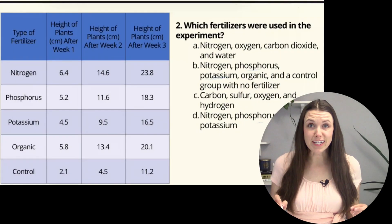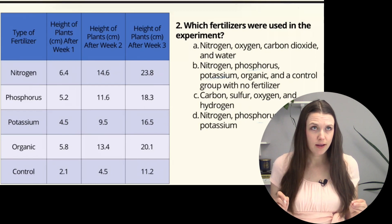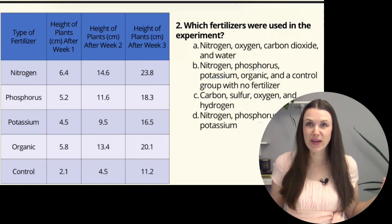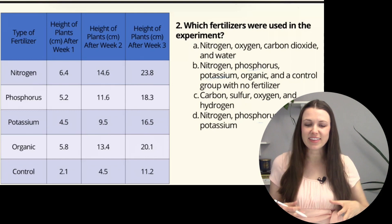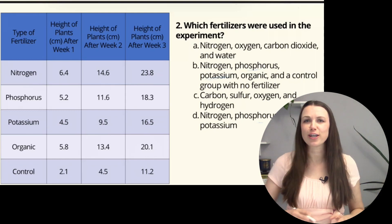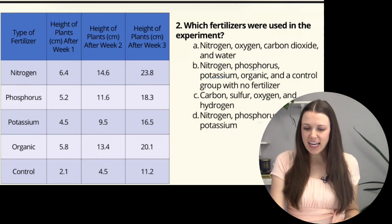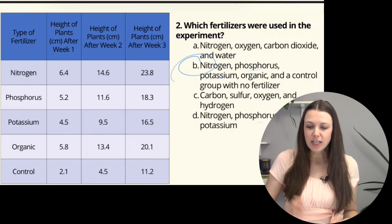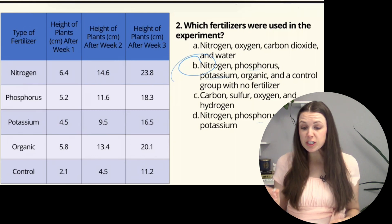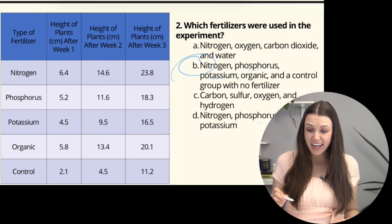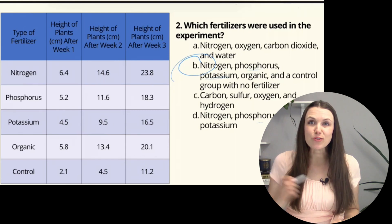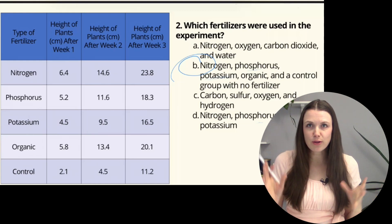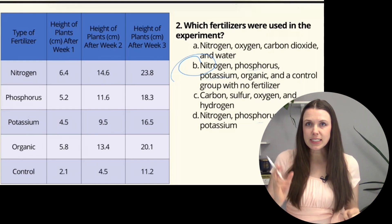Question 2: Which fertilizers were used in the experiment? This one is easy — just look at the chart. The answer is B: nitrogen, phosphorus, potassium, organic, and a control group with no fertilizer. That's one of those easy questions — they just give you the answer.